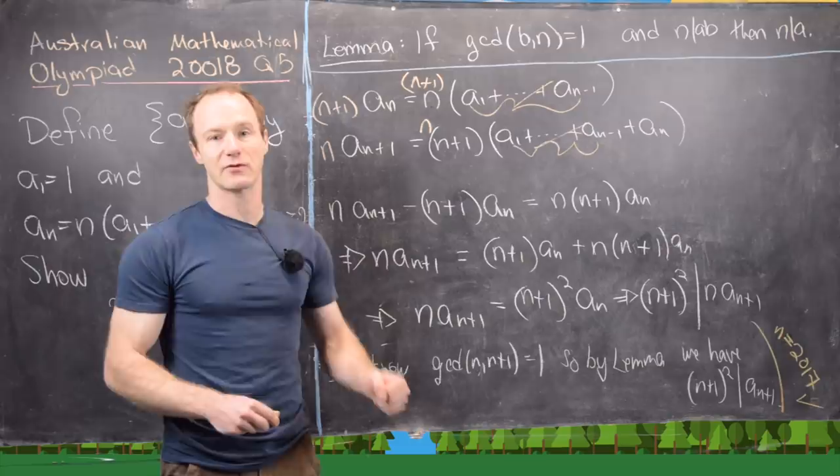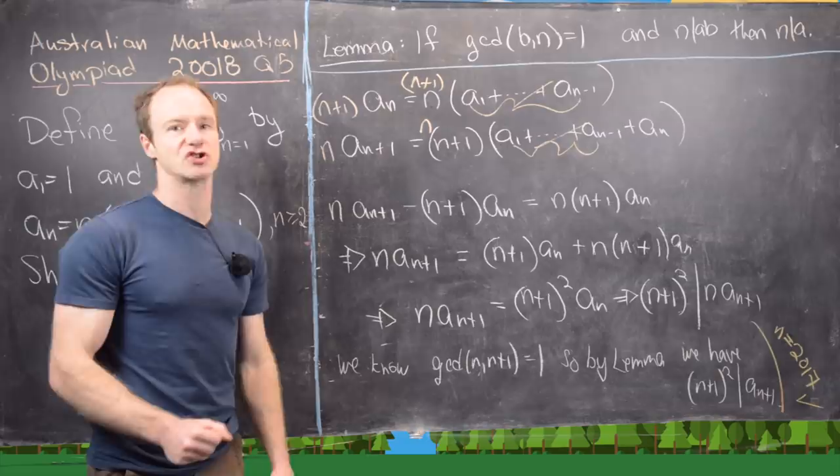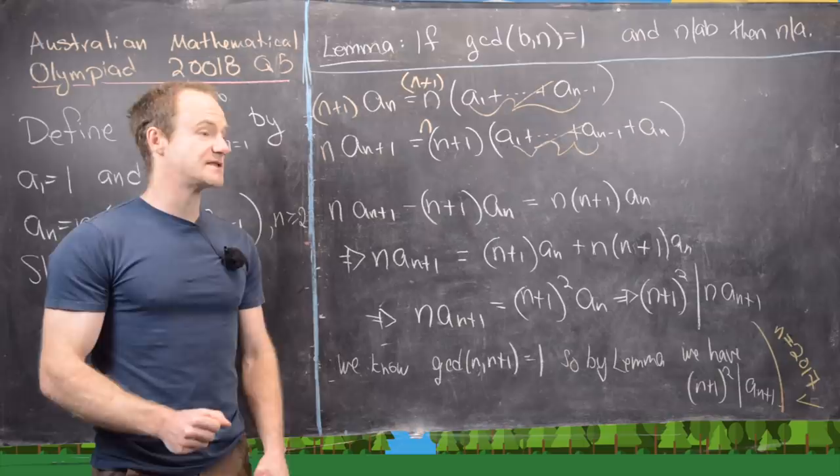So I'm actually not going to stop it right here. I want to find a closed form for these a_n's. And there's a bunch of ways to do that pretty easily. And I'm not going to do one of those easy ways. I want to use something called an exponential generating function in order to find a closed form. And I want to do that because it's a nice tool to use. And it actually works pretty nicely in this problem.